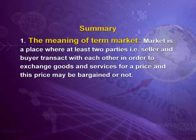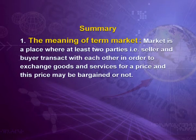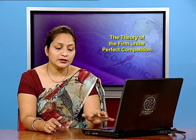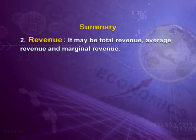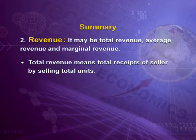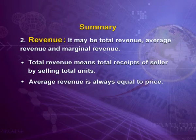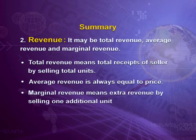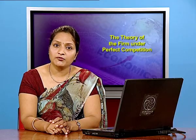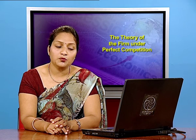We will keep our lecture till here today. Let us revise what we have done. We started with the meaning of the term market — a place where at least two parties, a seller and a buyer, transact with each other to exchange goods and services for a price. We then discussed different types of market. Our next topic was revenue: total revenue means total receipts from selling total units; average revenue is always equal to price; and marginal revenue means extra revenue from selling one additional unit. In our next lecture we will cover more topics on market and perfect competition.